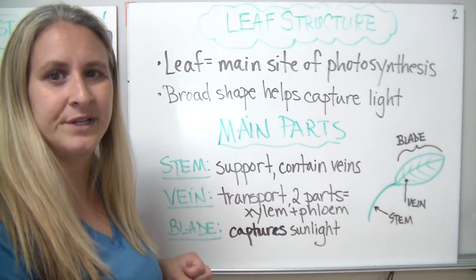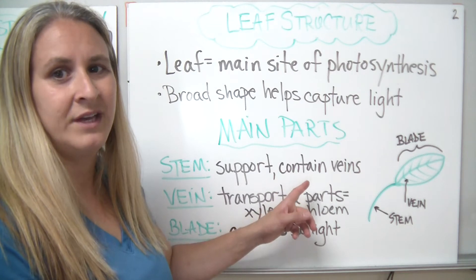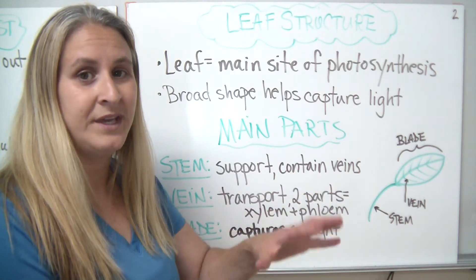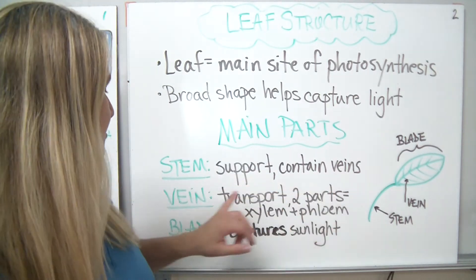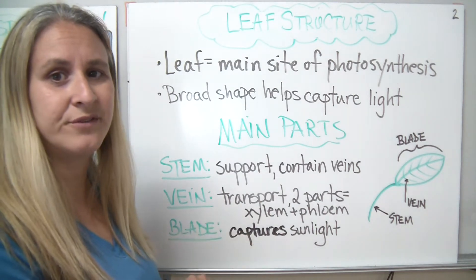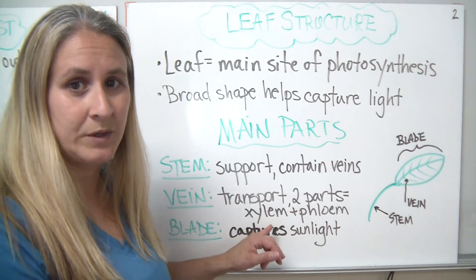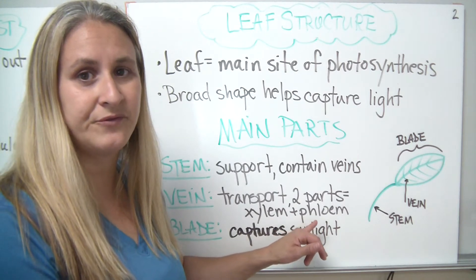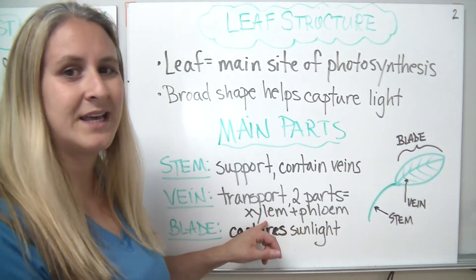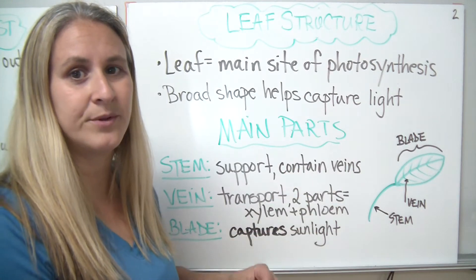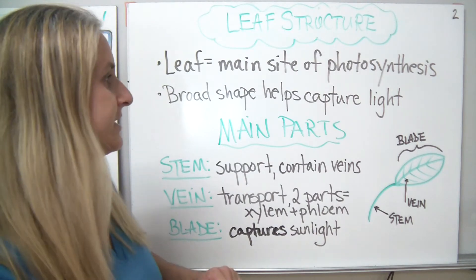There are three main parts of the leaf we're going to discuss. The stem, which helps to support the leaf and also contains the veins — it makes the connection from the main stem of the plant or even the trunk of a tree. The veins serve as transport structures for the plant. There are two main parts to the vein: the xylem, which transports water, and the phloem, which transports food. I usually remember that phloem kind of sounds like an F, and it transports food. The xylem can transport water all the way up from the roots, where plants are actually absorbing their water. And then the main part of the leaf is the blade, helping to capture the sunlight.